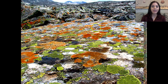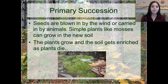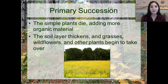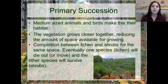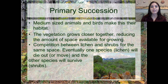Eventually seeds are blown in by wind or carried by animals, and simple plants like mosses start to grow in the new soil. Those plants grow and the soil enriches as the plants die. Herbs and weeds can now start to grow in the thicker, richer soil. The simple plants die off adding more organic material, and the soil layer thickens as grasses, wildflowers, and other plants begin to take over. Medium-sized animals, birds, and different types of insects start to inhabit the area. Competition between lichens and other plants eventually takes place, and the lichen typically loses out, dying off or moving to a different area with more rocks and less plant life.